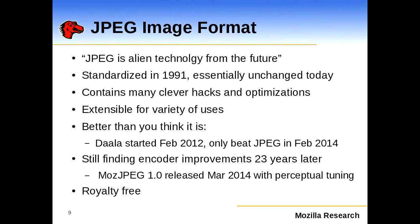Among professionals in the image and video community, we believe JPEG is alien technology from the future. It was standardized in 1991 but still seems incredibly relevant today and prescient in some of the ways it codes data. By and large, the JPEG we use today is pretty much the same as the JPEG standardized 25 years ago. There are some clever hacks and optimizations, particularly around SIMD, and it's also widely extensible — the format has mechanisms to embed other data, enabling annotations, lossless modes, and formats never intended in 1991.